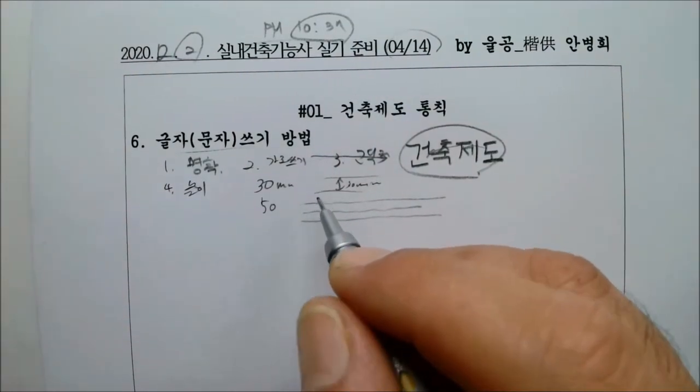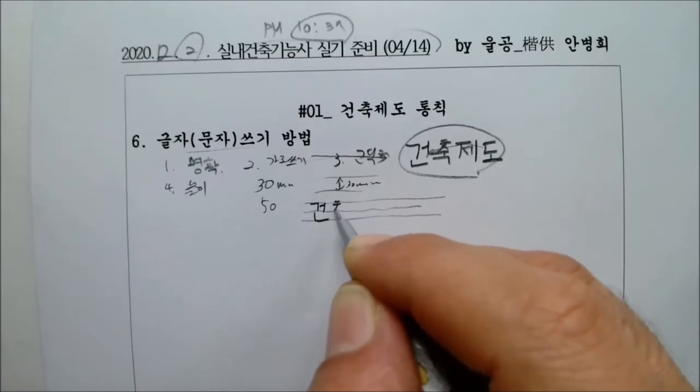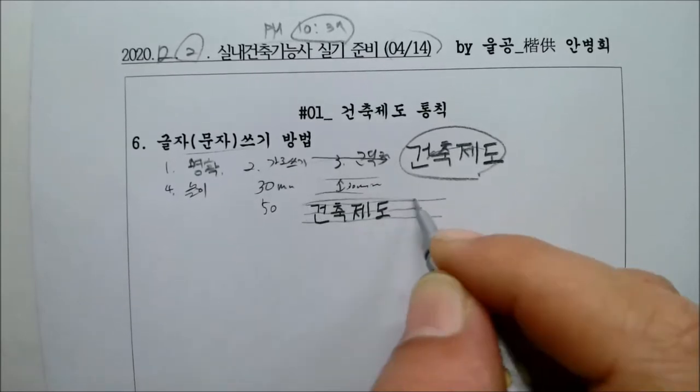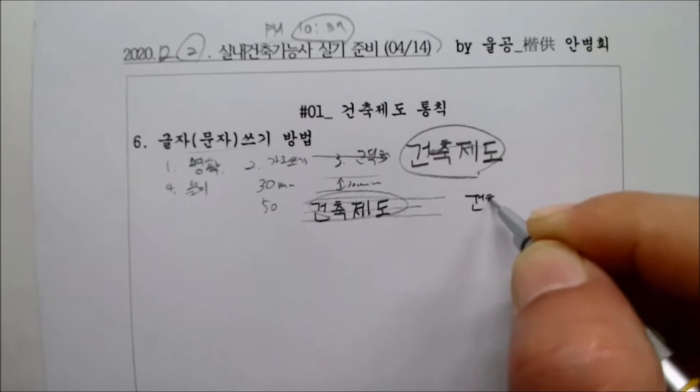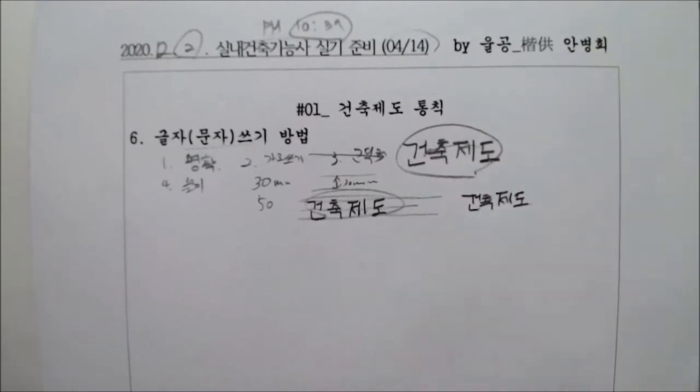여러분들 이런 식으로 글자 할 때, 건, 축, 제, 도. 글자 흔실성이 편해요. 만약에 이게 없으면 좀 그래요. 이해하시겠나요?